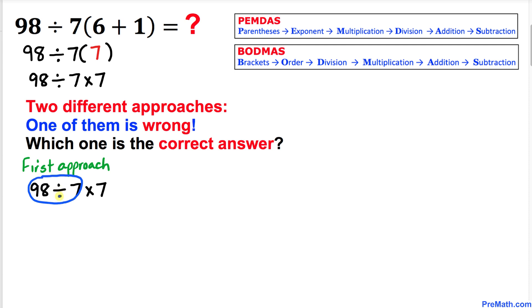We're going to take care of this division first. So we know 98 divided by 7 is 14 and then I'm going to write down times 7. 14 times 7 is 98 and that is one of the answers.